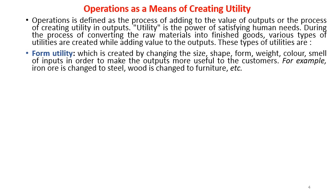Examples of form utility: iron ore is changed to steel — a clear change of form. Wood is changed to furniture — the shape, form, size, weight, and color of raw wood is changed into furniture. These are examples where a transformation of form takes place, representing form utility.